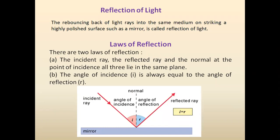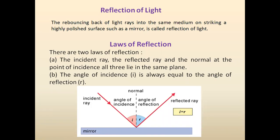Here we discuss the phenomenon of reflection of light. What is reflection of light? If there is a mirror and one ray is incident on this mirror and it rebounds within the same medium, this is the incident ray and this is the reflected ray. If the incident ray is reflected by the mirror, this phenomenon is known as reflection of light.